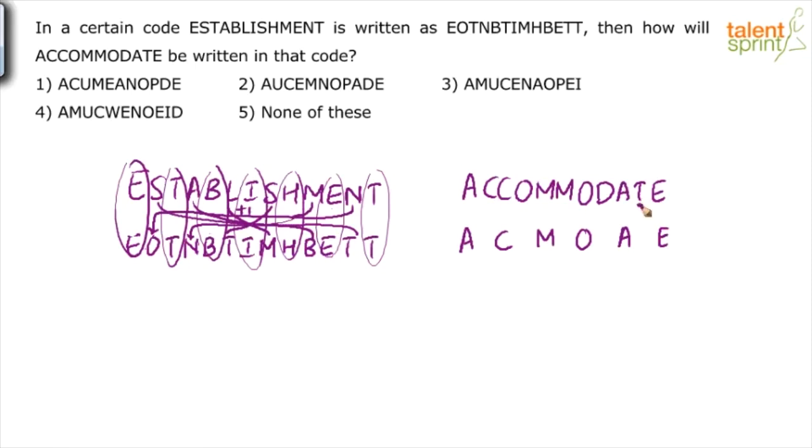Now take this letter T. T plus 1, U comes here. And I think here itself, we should be able to eliminate first option, third option and fourth option because first option is A, C, U. But we know that it should be A, U, C. So answer should either be option 2, which satisfies A, U, C, the first three positions, or option 5.